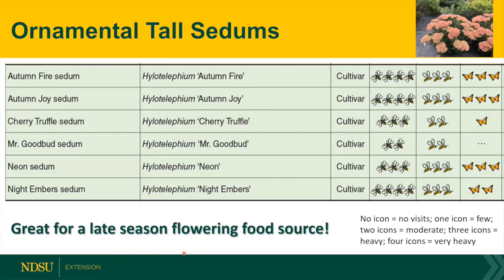Moving on to the tall sedums — we had just cultivars here. The most common ones liked by the bumblebee and the honeybee were Autumn Fire or Autumn Joy, and Night Embers. Mr. Good Bud had some trouble — it ended up not standing very well. But any of the tall sedums is great for a late-flowering food source for all pollinators.